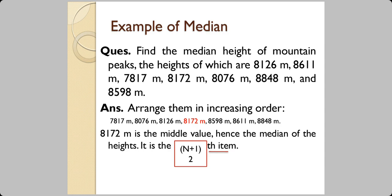Here's an example: there are seven values given in random order. First, arrange them in increasing order — it doesn't matter which way. The middle value is the (n+1)/2 th value. With seven values, (7+1)/2 = 4, so the 4th value — which is 8172 — is your median.